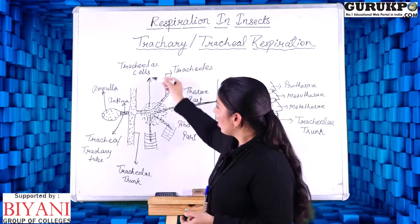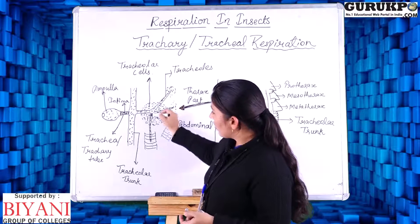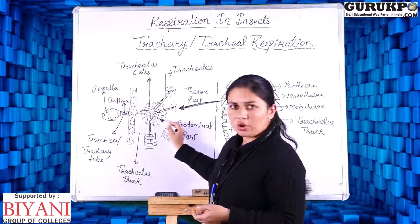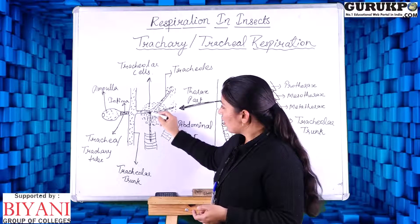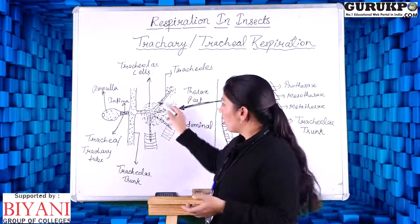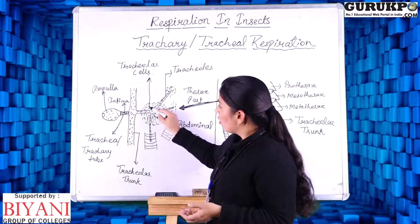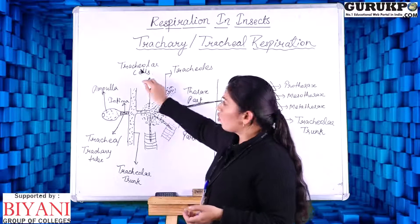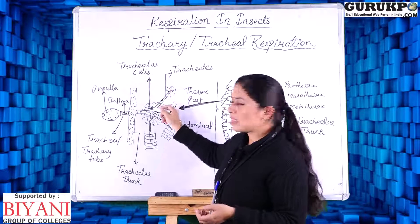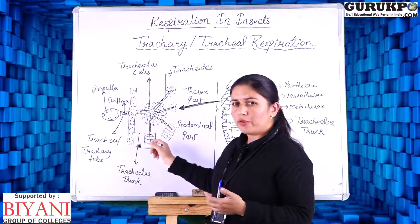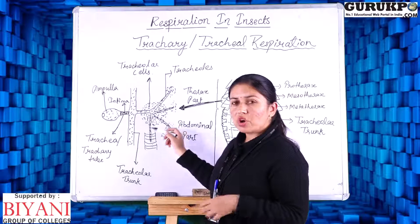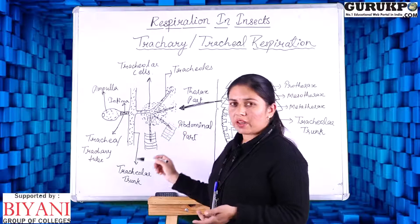At the junction of the tracheary tube and the tracheoles there are cells present in bunch form, known as trachular cells. These trachular cells secrete a fluid which is known as trachular fluid, which also helps in respiration.